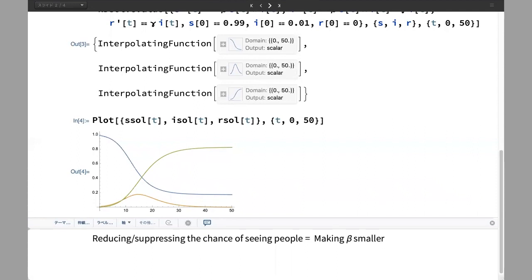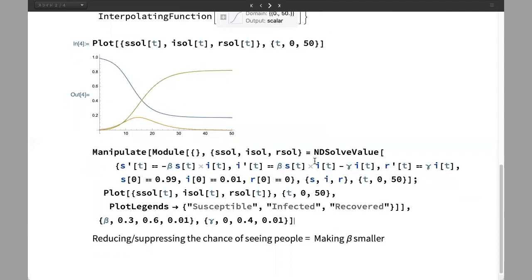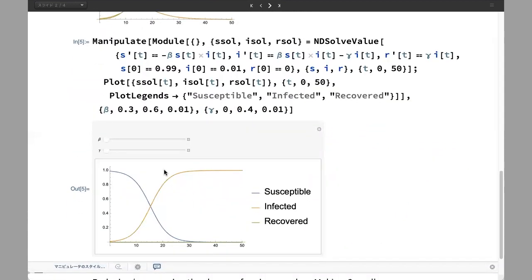To make things more interesting, let's put everything in the manipulate function like this. This part is exactly the same as before: S solution, I solution, R solution, as the solution of NDSolveValue. Then here's the line for plot. This module is a standard trick to put the process of multiple lines in the manipulate function. This makes a package in a sense in the single process.